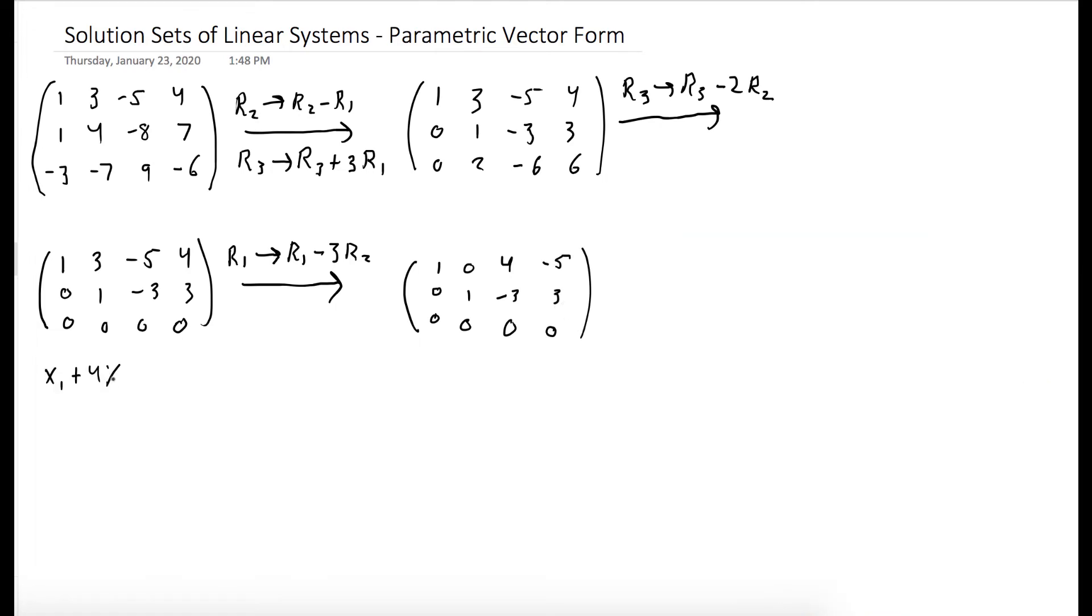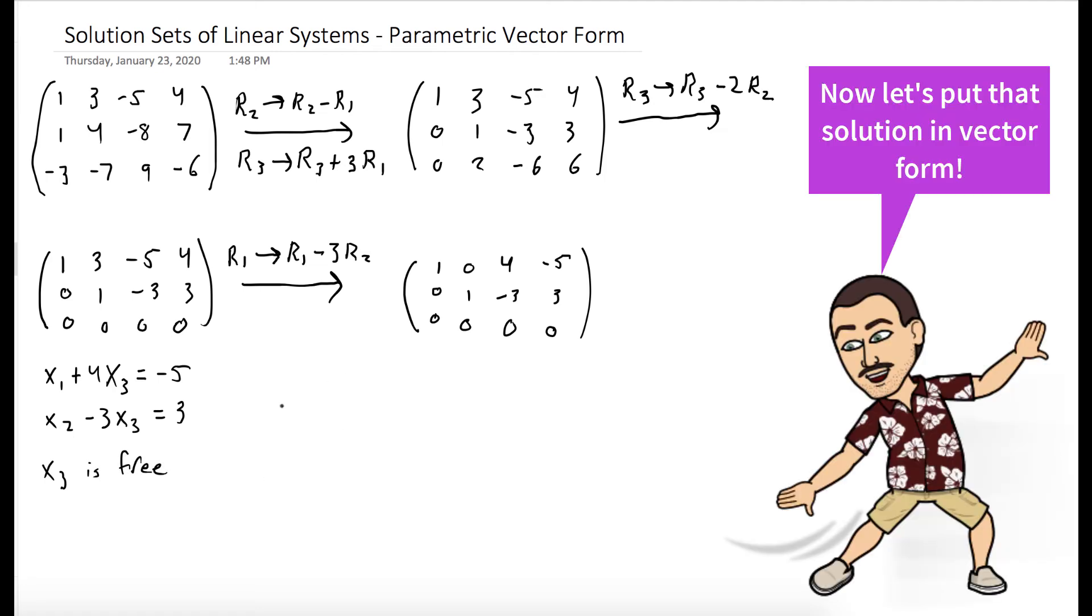And now we can write down the equations: x1 plus 4x3 equals negative 5, and x2 minus 3x3 equals 3. We can see that x3 is our free variable.